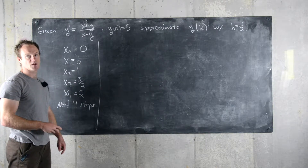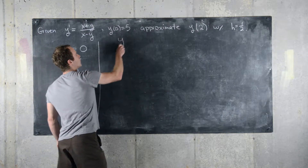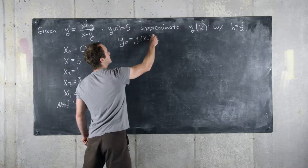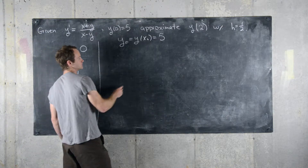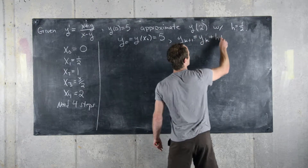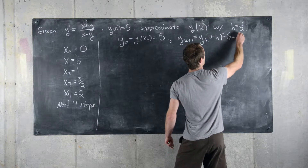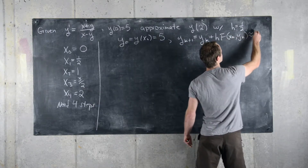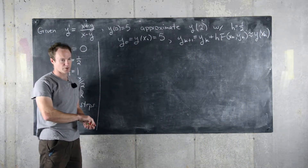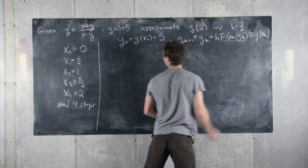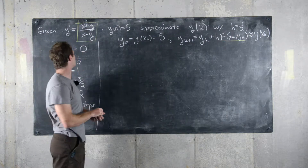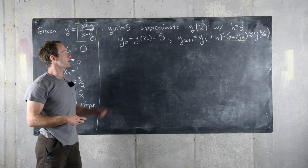The next thing is to recall Euler's iterative formula. We have y_0 = y(x_0) = 5, and then y_{k+1} = y_k + h * f(x_k, y_k), which is approximately equal to y(x_k). Here f is given by (x + y) / (x - y), the right-hand side of this differential equation.